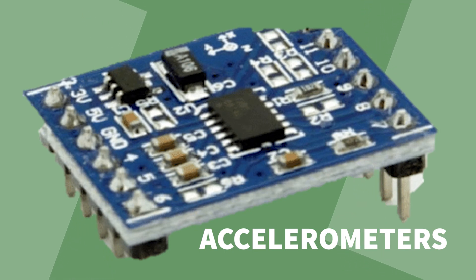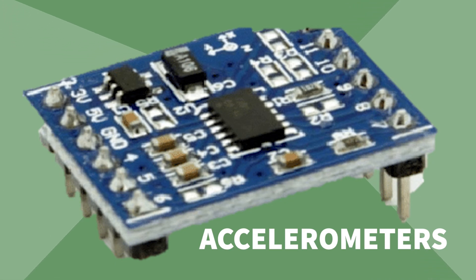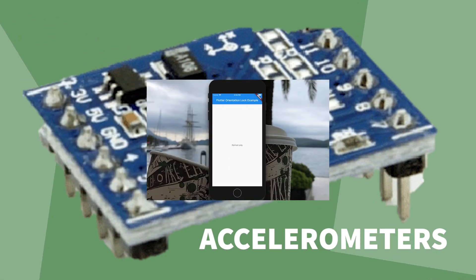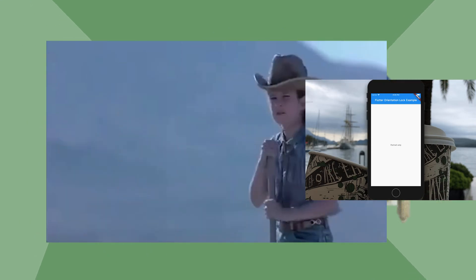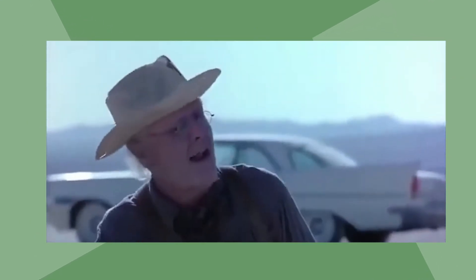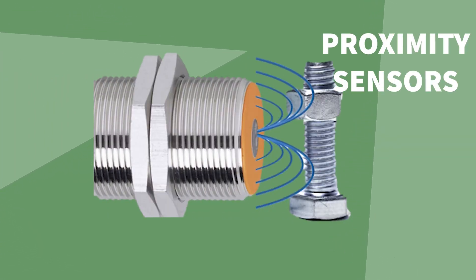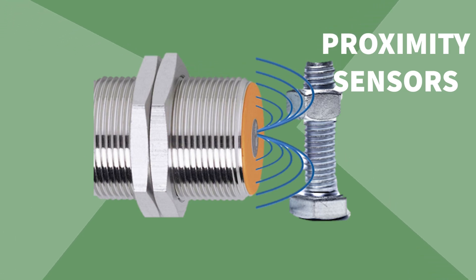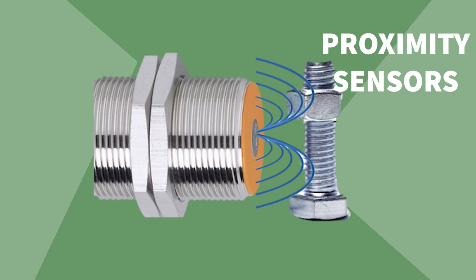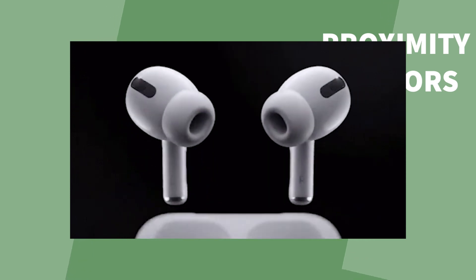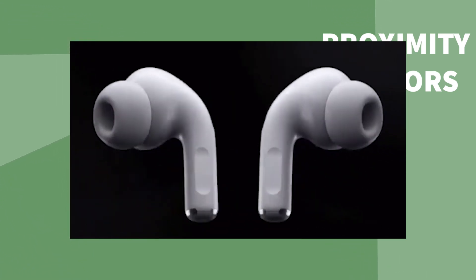Accelerometers measure the speed or movement of an object. These can be used in cars for airbags and in phones to switch between portrait and landscape mode. Proximity sensors detect the presence of a nearby object — for example, detecting when a face is close to a phone screen and switching off the screen when near the ear, or allowing airpods to connect to your phone when placed in your ear.